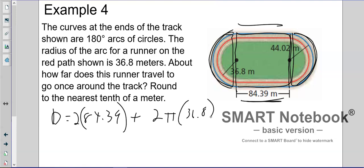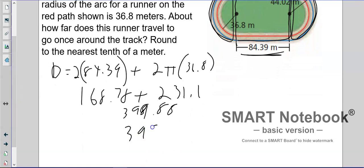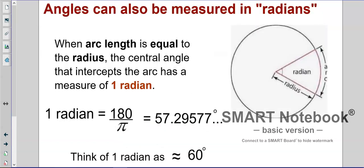So if you crunch that, two times 84.39 is 168.78. And if you do two times 3.14, or the pi key, times 36.8, you get 231.1. And if you add those together, you get 399.88. So to the nearest tenth of a meter, that would be 399.9. Now, if you use the pi key, you'll actually end up with 400. So just so you know, it's going to be slightly off, and I'll allow it either way.